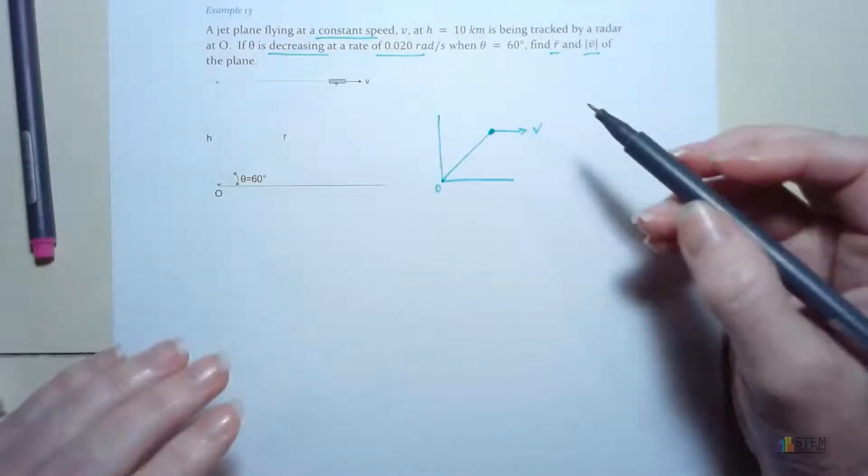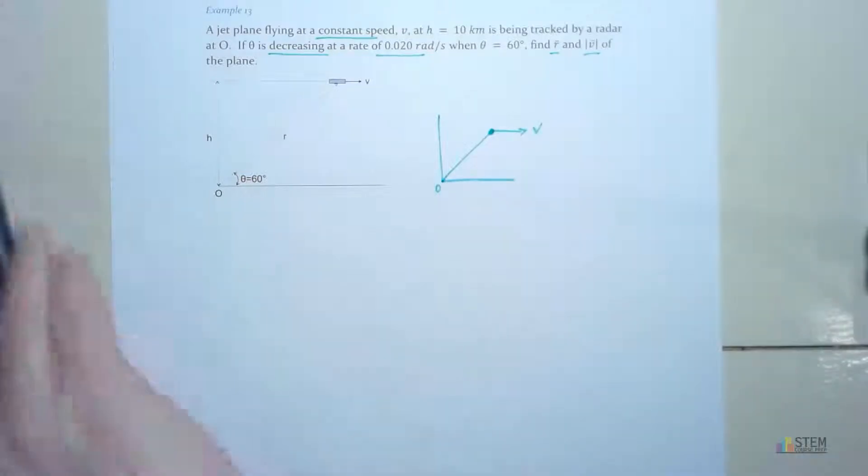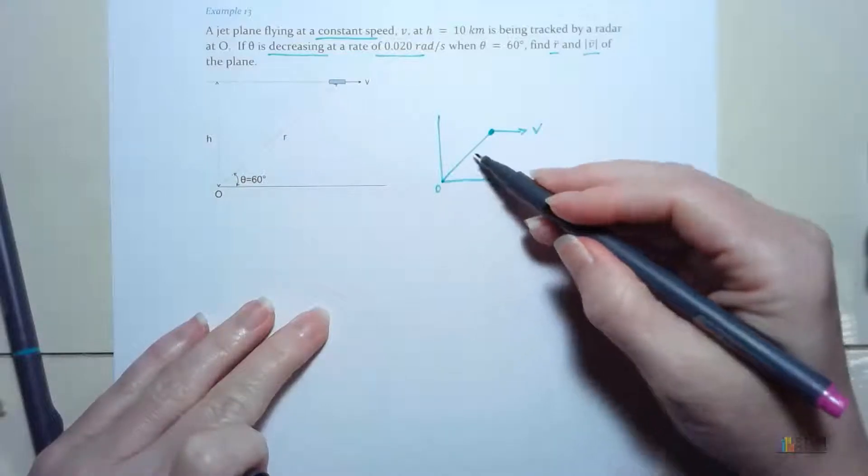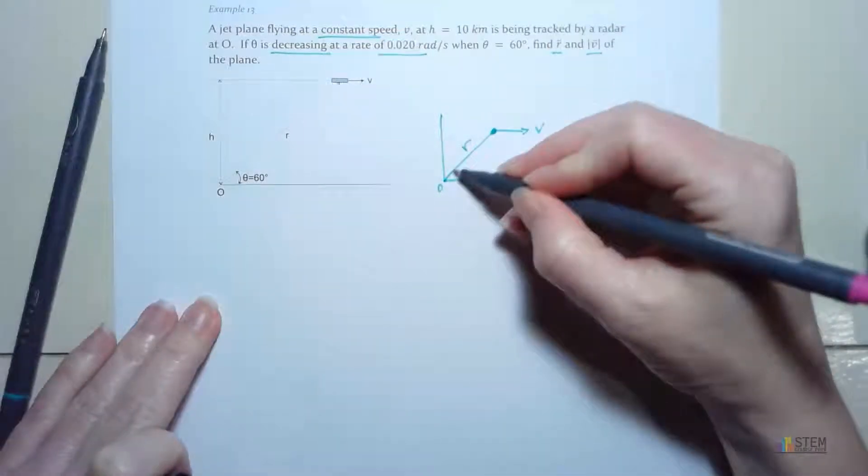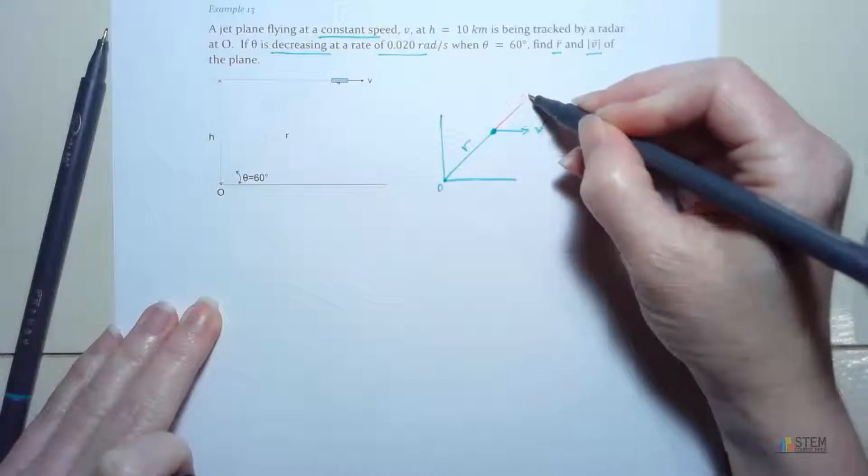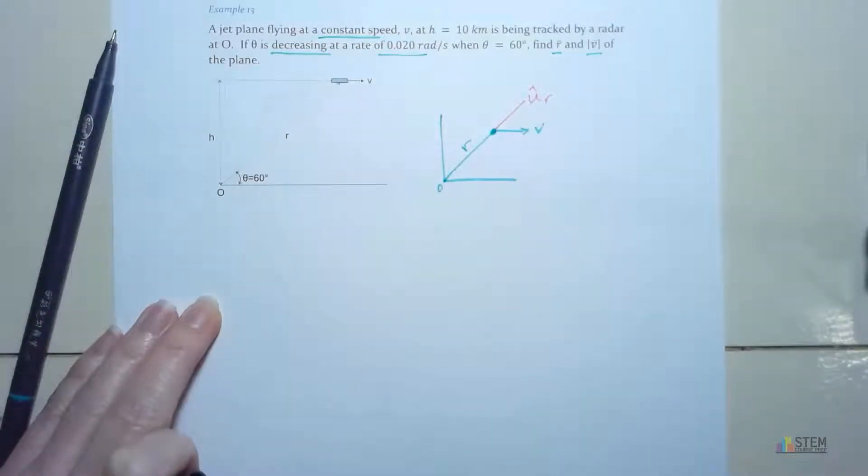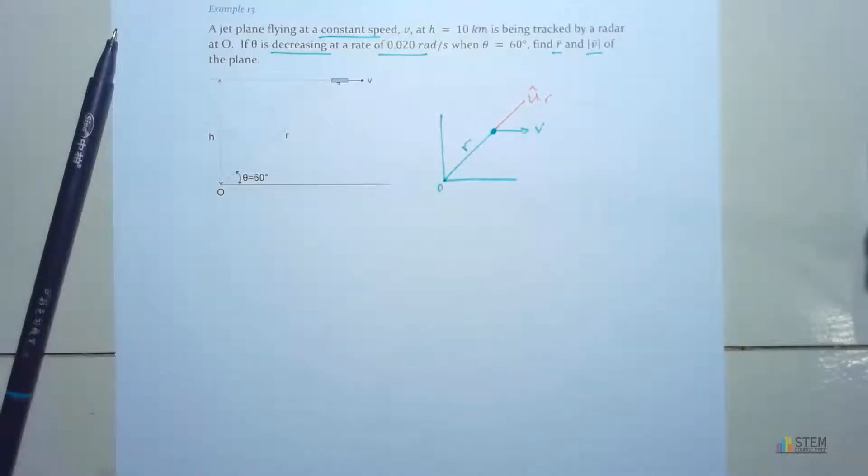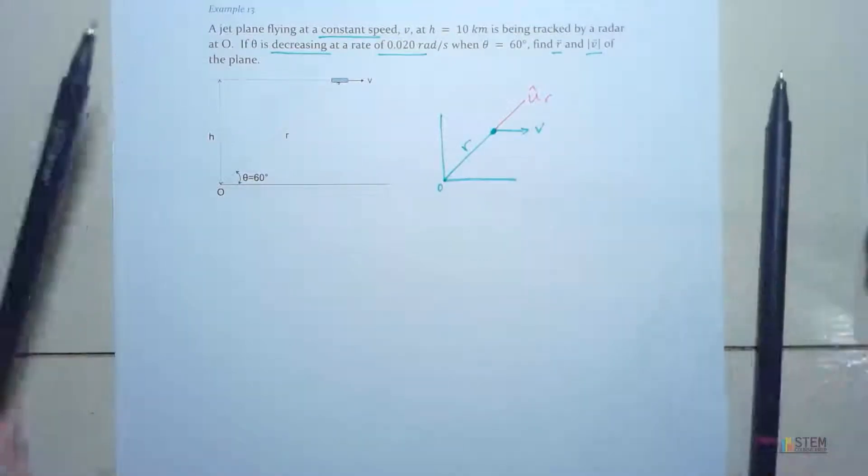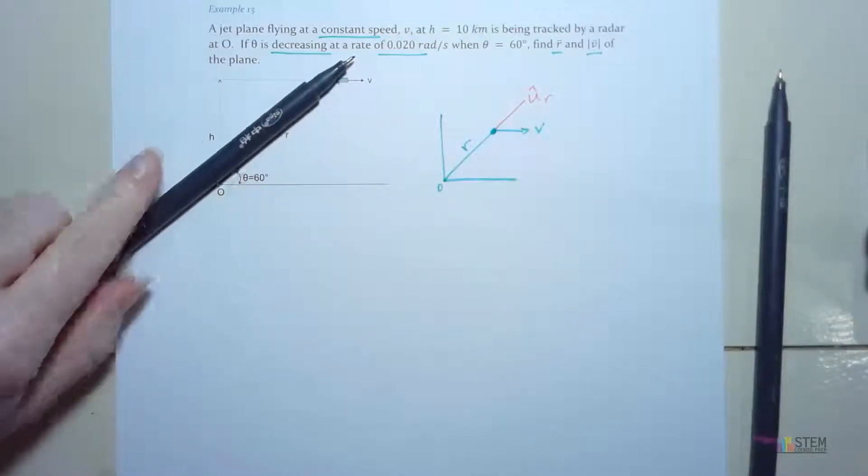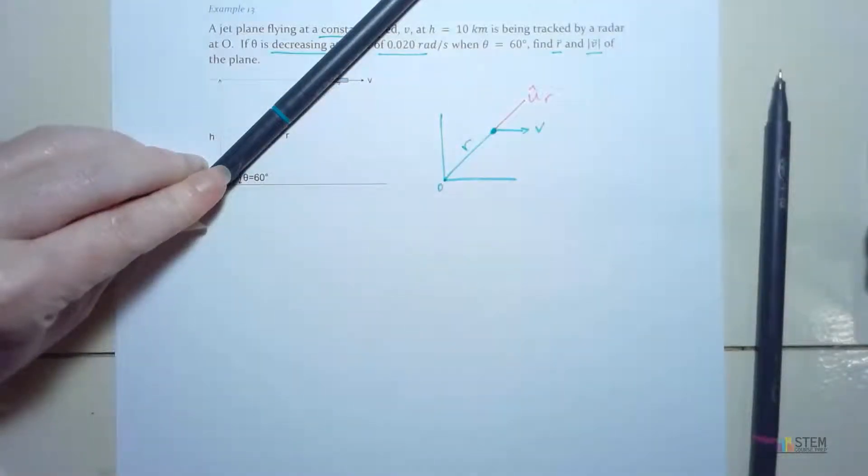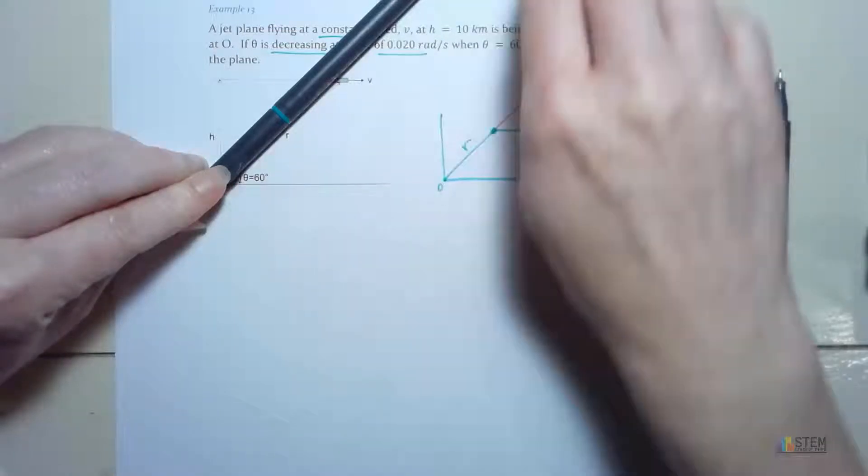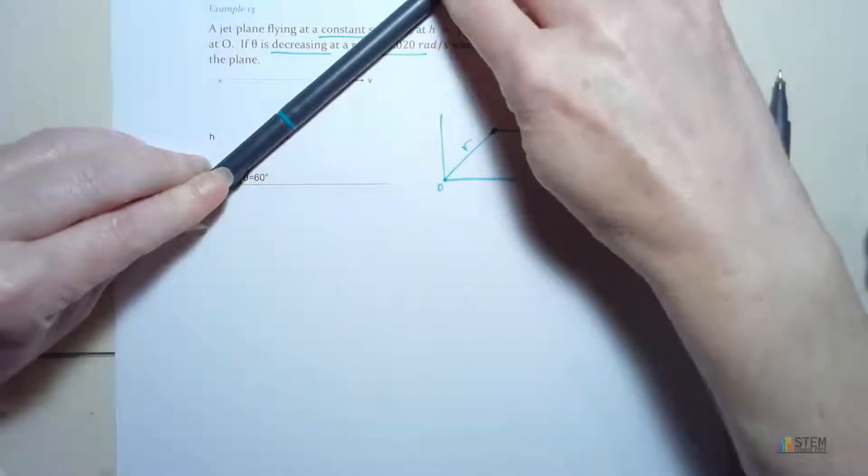Now I need to figure out my U sub R and U theta. So where are those going to be? Well remember, we said that U sub R was basically just going to extend out your radial line. Here's my radial line right here, that's R. So all I need to do is just extend this out. So there's U sub R. Now we said that the theta axis would point in the direction of increasing theta.